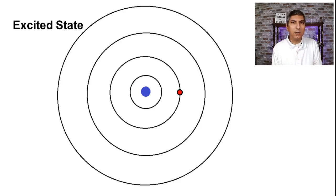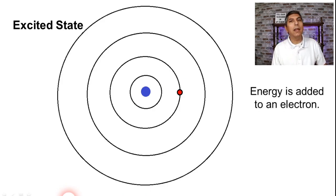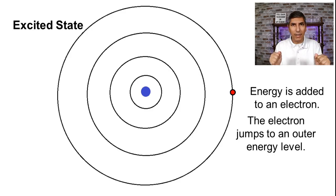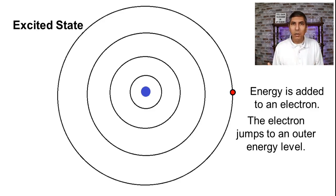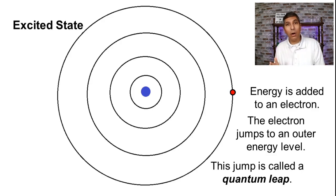The excited state exists whenever we add energy to electrons. For example, let's say we have this atom here — an oversimplified picture with a nucleus and an electron in the second energy level. If we add energy to an electron by sticking the atom into a Bunsen burner flame or jolting it with some electricity, that energy is going to cause the electron to jump to an outer energy level. That's the excited state. This jump is called a quantum leap, whether an electron jumps to an outer energy level or when it jumps back home to its ground state.